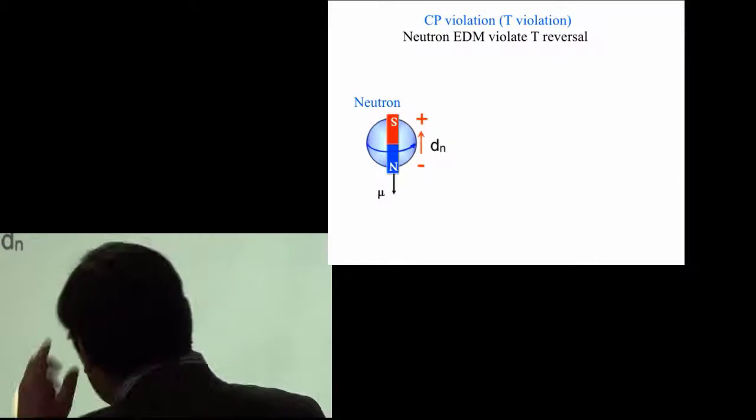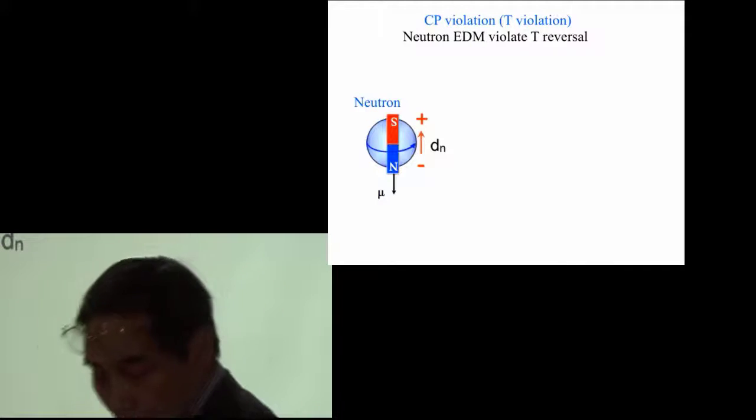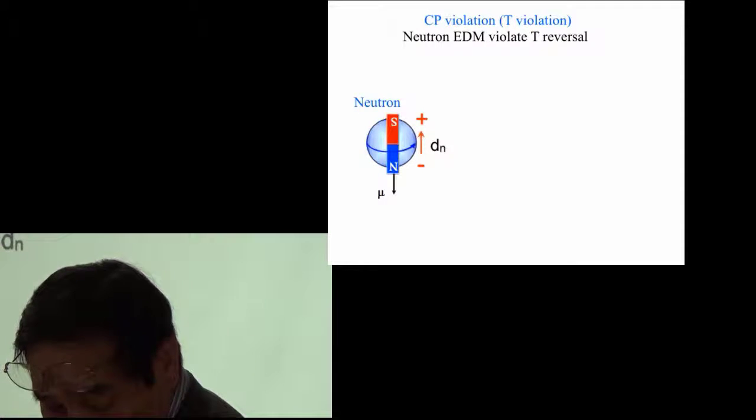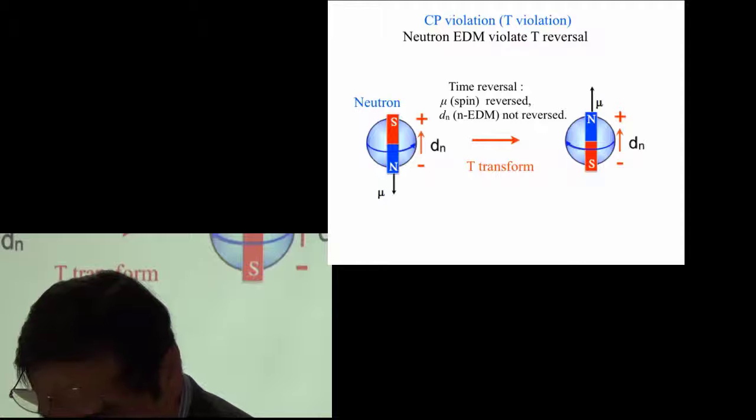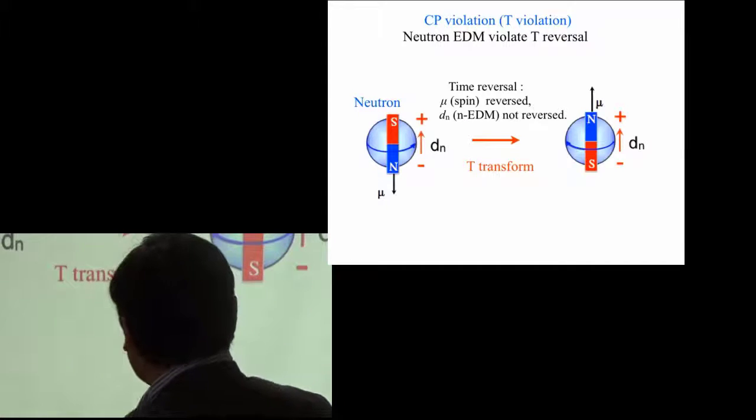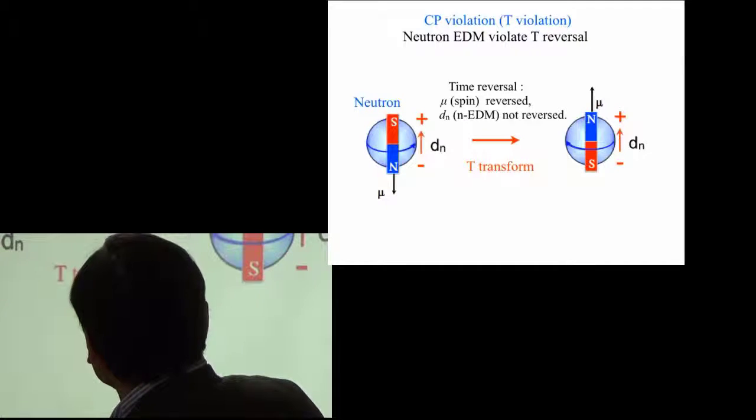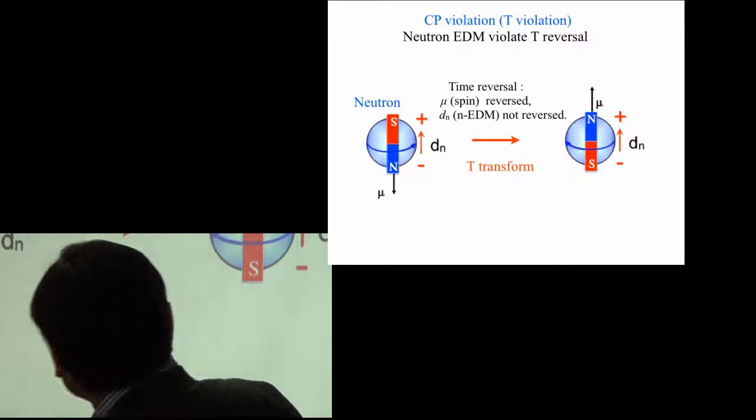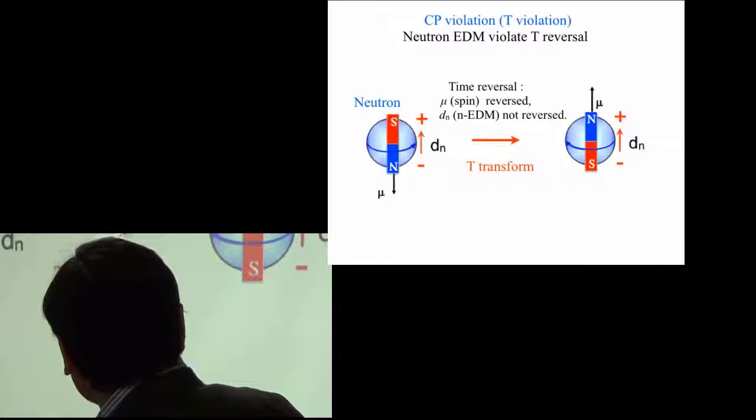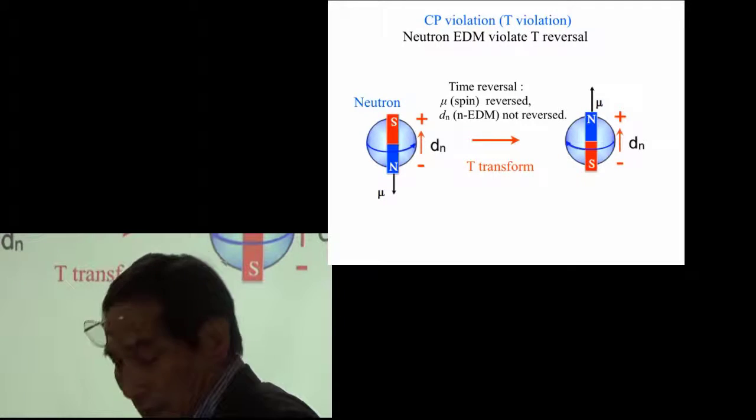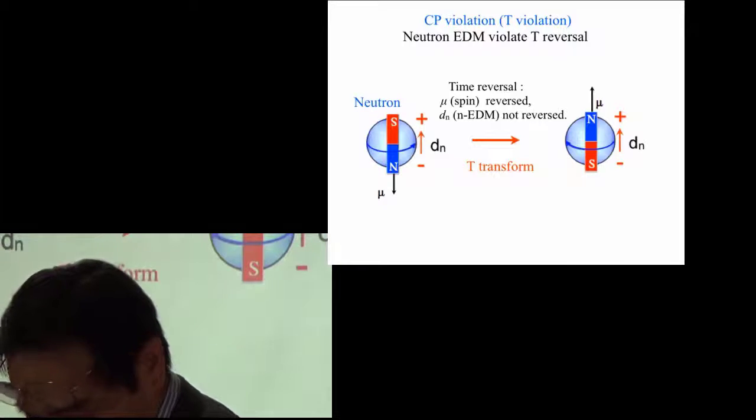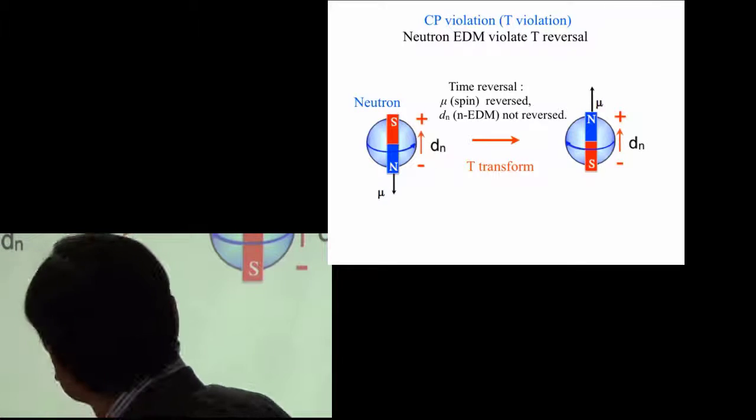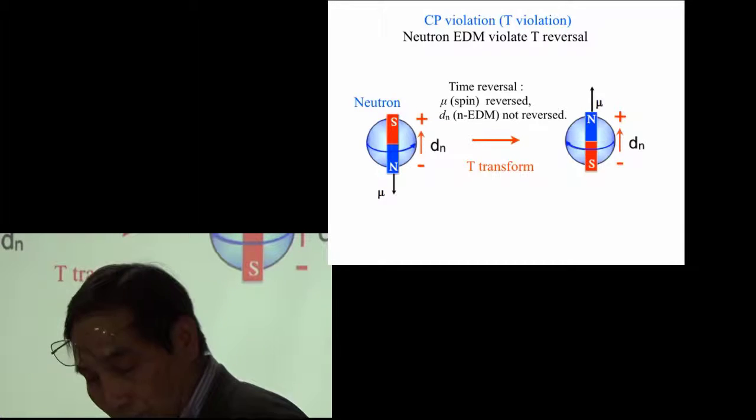So neutrons have a magnetic moment. If we have a time reversal transformation, then the magnetic moment is reversed. However, if neutrons have also the dipole moment DN, then it is not reversed by the time reversal transformation. So that the neutron EDM can detect the time reversal violation.